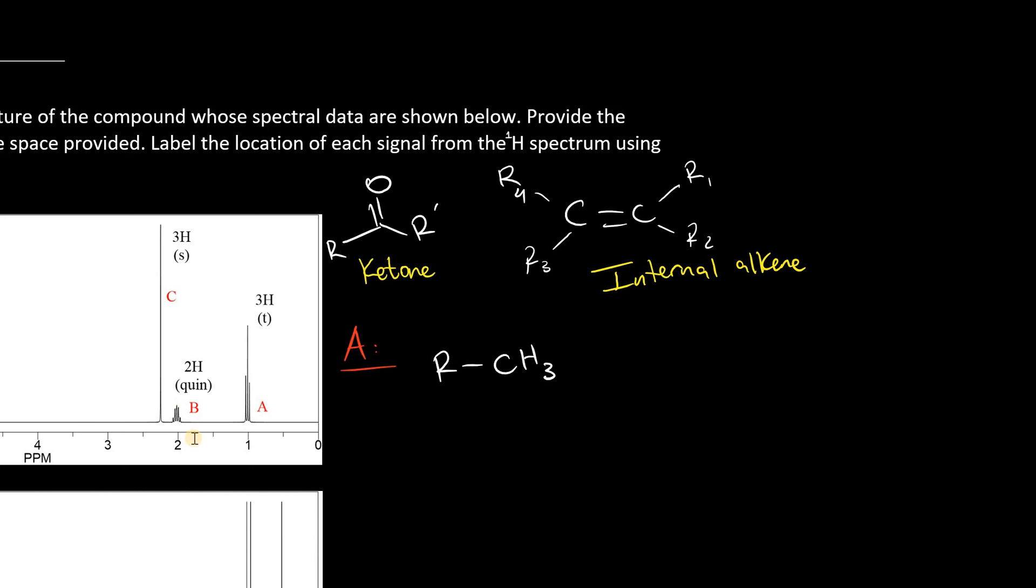Signal B is a 2H quintet, meaning we have 4 proton neighbors. And because of its low frequency, it's probably very close to the methyl. So I can begin piecing together my structure already.